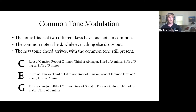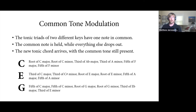In the common tone modulation, you have tonic triads of two different keys that share one note in common. That common tone is held out while everything else drops out, and then the new tonic chord arrives with the common tone still present. Starting from C major, using the note C: C is the root of C major, but it's also the root of C minor, the third of A-flat major, the third of A minor, the fifth of F major, or the fifth of F minor.